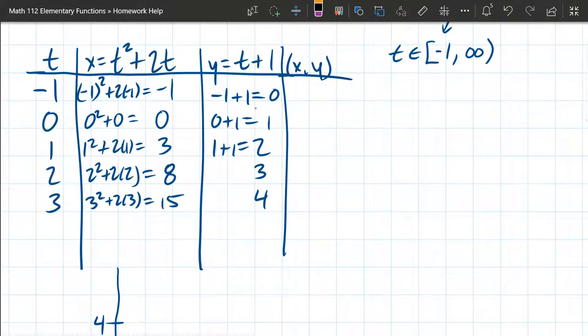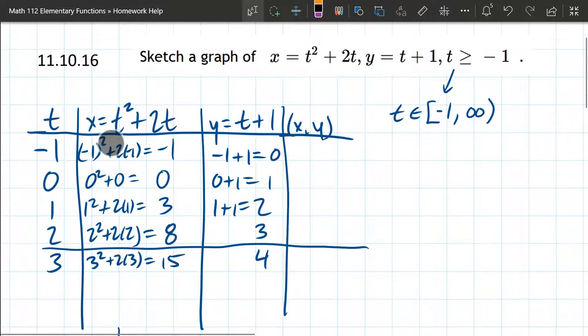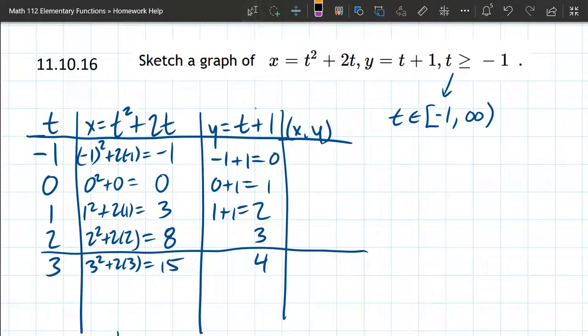Alright, I'm just going to stop it right at the t value of 2. Just because 15 is really big, I don't want to draw my graph over that far. I think going all the way to 8 will be good enough.